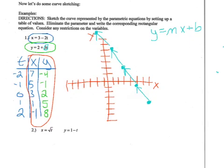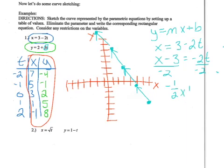I have x equals 3 minus 2t. I am going to subtract the 3 to the other side. So x minus 3 equals negative 2t. And then divide everybody by negative 2. So I get negative 1 half x plus 3 halves equals t.